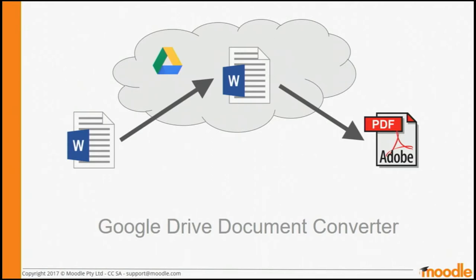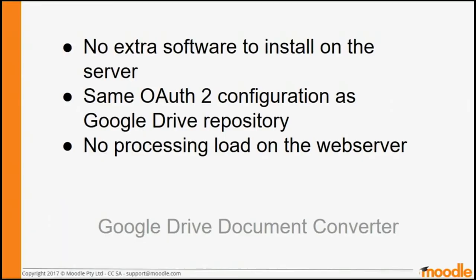Every time it needs to convert a document, it uploads it to a specific Google account, downloads the PDF, and then deletes the original file. It is important to know that it does send files to Google and bring them back, in terms of privacy policies at your institution. But it works really well. Another benefit is that the processing is actually done on Google, so document conversion can be a CPU-intensive job. If done on your web server it might slow down web requests and make your site seem slow, but in this case it's Google that handles the load — they've got lots of big data centres.